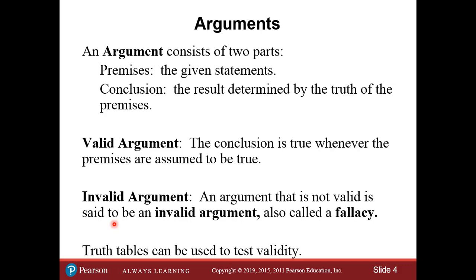There are different types of fallacy for deductive arguments and inductive arguments, but we're going to look at forms of arguments dealing more with the deductive. So a set of premises followed by a conclusion is an argument. A valid argument is where the conclusion is true whenever the premises are assumed to be true — if the premises are true, the conclusion must be true. If that's not the case, then it would be an invalid argument. Truth tables are a tool we can use to test the validity of an argument.